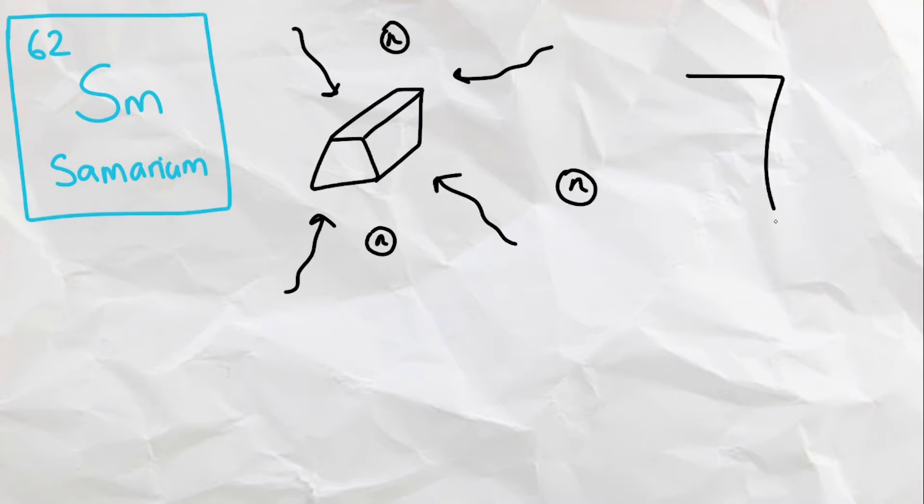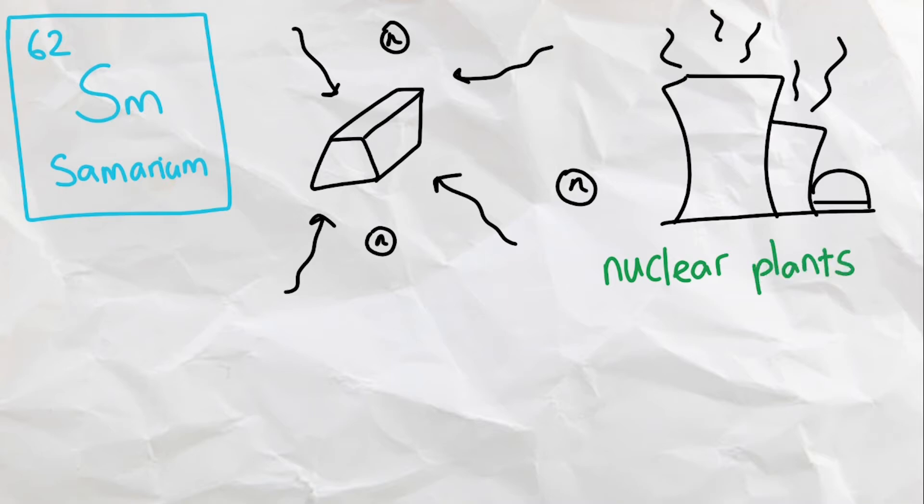Next we have Samarium, a soft metal that is able to absorb infrared waves and neutrons, making it useful in nuclear reactors. A common use for this element is in Samarium cobalt magnets, which is one of the most powerful magnets and has the highest resistance to demagnetization.